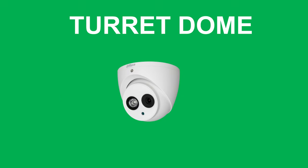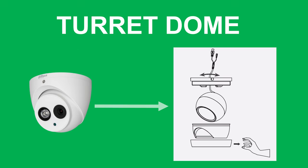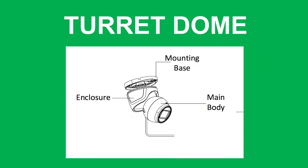Now let's tune back into the turret dome. If you google 'turret' you'll get a definition like 'a tower within a tower,' or in military equipment, 'a mechanism within a mechanism.' When you open up a turret dome, you have a mounting base, an enclosure, and the main body — which is the actual camera — sitting on a ball. Then to close it all off you have a mounting ring. That's why it's called a turret: it fits within three different parts, almost like a mechanism within a mechanism.